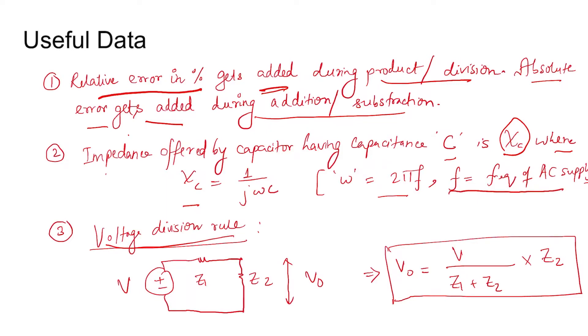The voltage division rule states that if you have two impedances Z1 and Z2 with a supply V, and if you want to find the voltage across Z2, then V_0 will be V by (Z1 plus Z2) into Z2.